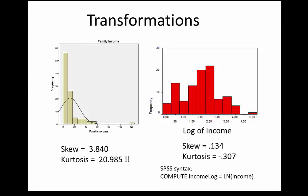In SPSS, the syntax to accomplish this is a compute statement: compute new variable equals the log of the old variable. If the goal is to compare two groups on income using a t-test, the original measure in dollars would not satisfy the t-test assumption that distributions are reasonably normal. A t-test on log income would be on much sounder footing. When we take a log, large numbers are reduced much more than smaller numbers. One could argue the log scale on income is more meaningful behaviorally — the difference between $10,000 and $11,000 is much more important for a family than the difference between $110,000 and $111,000.